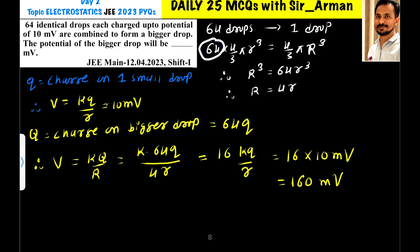64 times the volume of one drop, 4 by 3 pi r cube, equals 4 by 3 pi capital R cube, which is the volume of the bigger drop. So 4 by 3 pi cancels, and r cube equals 64 small r cube. Taking cube root on both sides, R becomes 4r. That is, the radius of the bigger drop will be equal to 4 into small r.